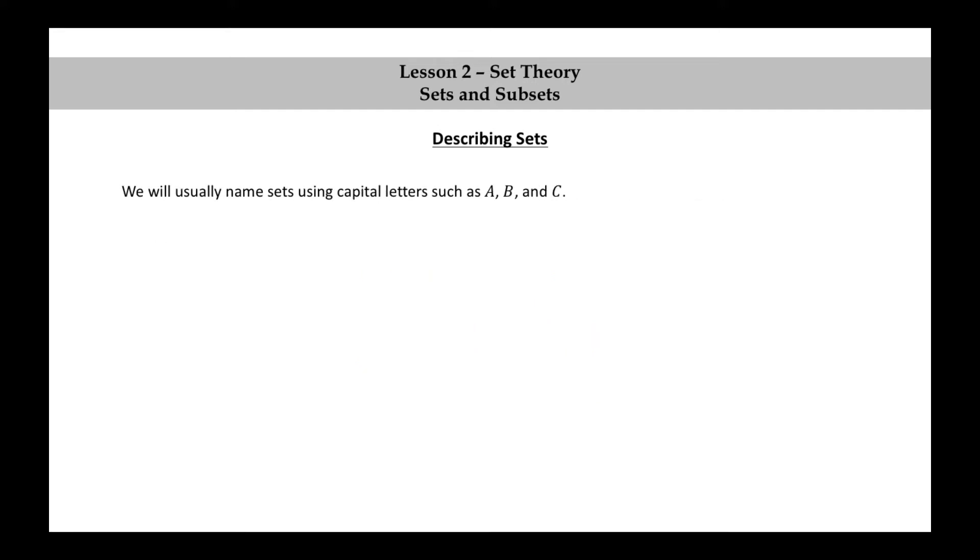We will usually name sets using capital letters such as A, B, and C. For example, we will use the capital letter A to represent the set consisting of the numbers 1, 2, and 3. So A is the set consisting of the elements 1, 2, and 3.